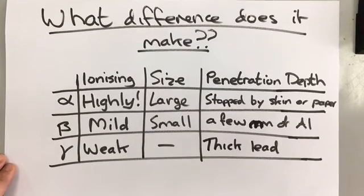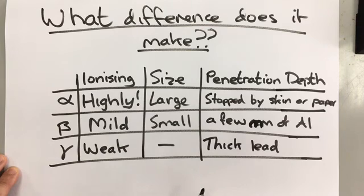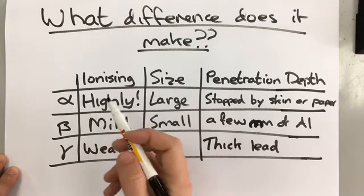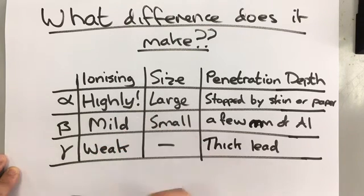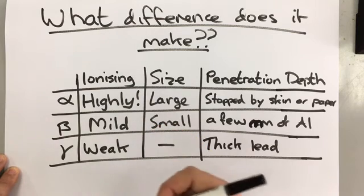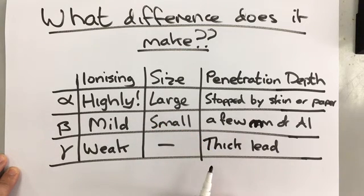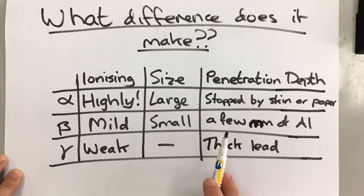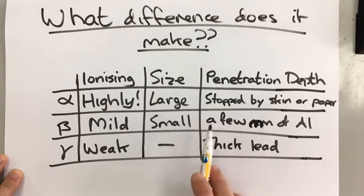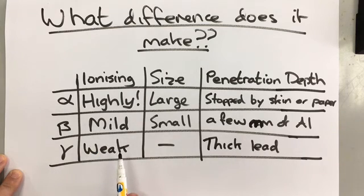Although alpha is the most ionizing and therefore the most dangerous, it's actually not that bad for us because it has to actually get inside our bodies before it can do any damage because our skin will stop it. However, beta particles can get through our skin so they're more dangerous for us. They're also more ionizing than gamma rays, and gamma rays can travel a long distance and they can travel through most things. So if you're exposed to gamma rays for a long time then that can be quite damaging.